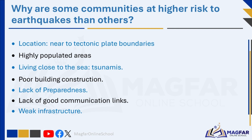Low-income communities often have limited resources for building earthquake-resistant structures, disaster preparedness training, and post-disaster recovery efforts. Additionally, limited access to healthcare and communication infrastructure can worsen the impact. Developing countries like Mexico and Haiti suffer badly when an earthquake strikes — their governments do not have enough money to deal with the effects and rely on help from other countries. More developed countries are richer, and their governments build stronger buildings and have rescue teams and doctors who can help people.